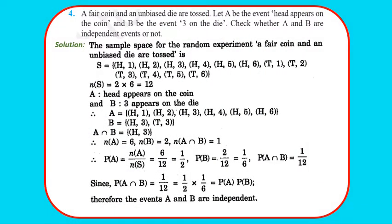Question 4: A fair coin and an unbiased die are tossed. Let A be the event head appears on the coin and B be the event three appears on the die. Check whether A and B are independent. The sample space S = {H1, H2, H3, H4, H5, H6, T1, T2, T3, T4, T5, T6}, so total elements = 12.